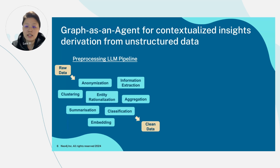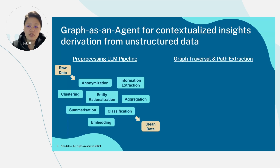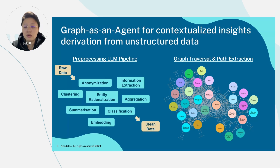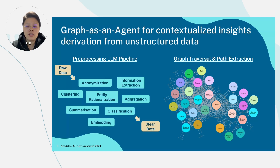Once we have the clean data, we are ready to create a graph by running document extraction with the LLM graph transformer module from LangChain. Once the graph is created, you will soon realize that it resembles a hairball, which is part of the original intent, but this also makes it very difficult to use. So in order to decode the rich information captured in the graph itself, our strategy is to separate graph models and graphs based on their purpose.